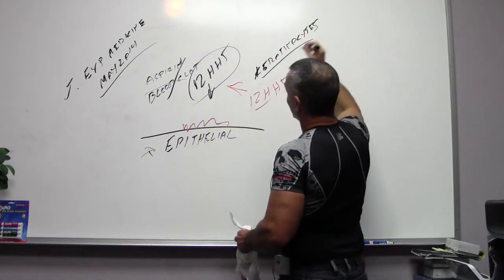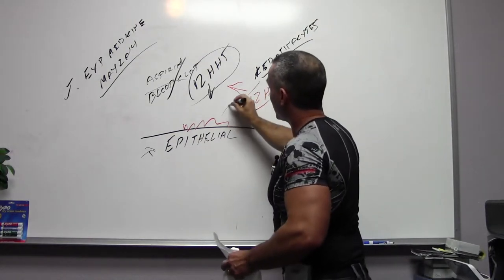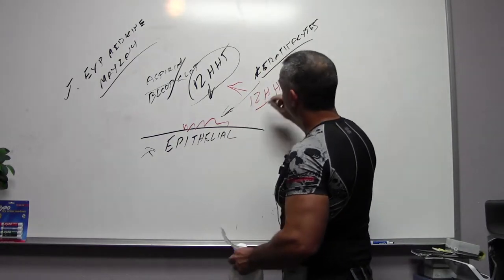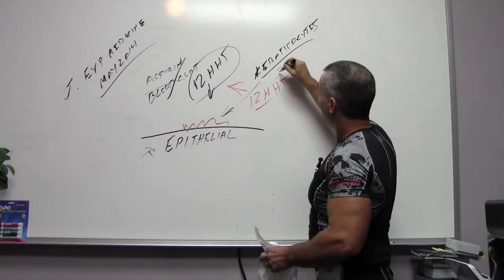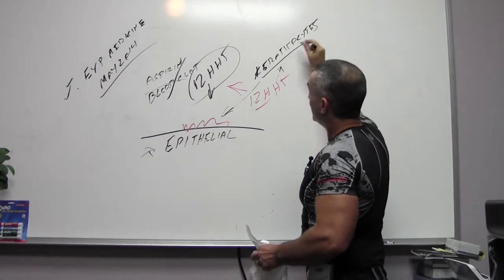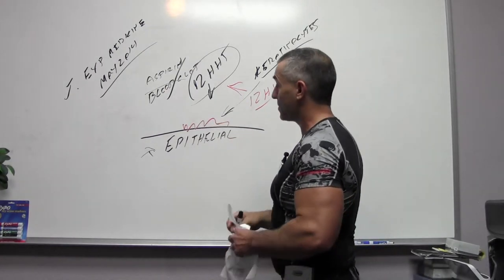Because the keratinocytes help heal this. So 12-HHT is required for these keratinocytes to come to the wound and help heal it.